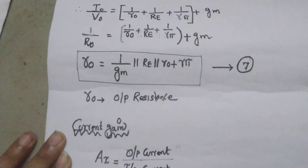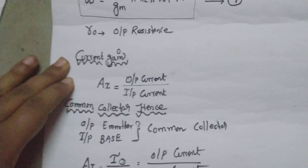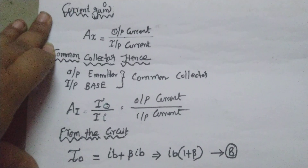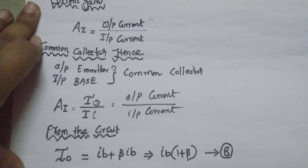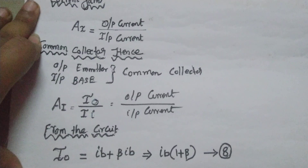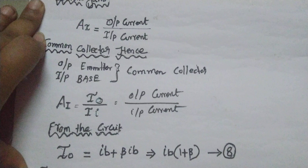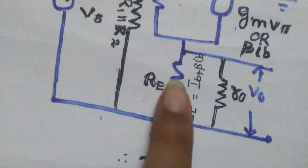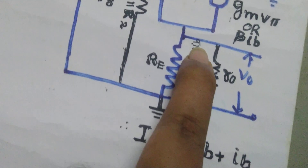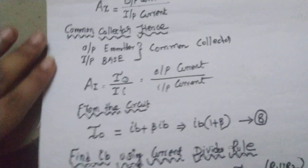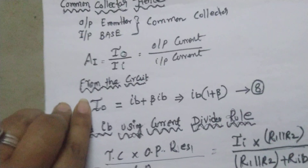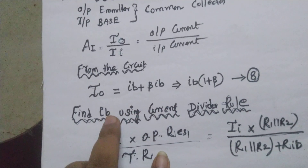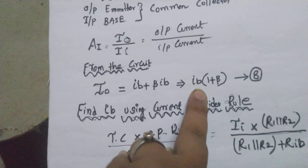Next is the current gain. For a common collector amplifier, the output terminal is the emitter and the input is the base. So output current I-naught = IE and input current = II. IE = IB + β·IB = IB(1+β). Now we need to find IB.